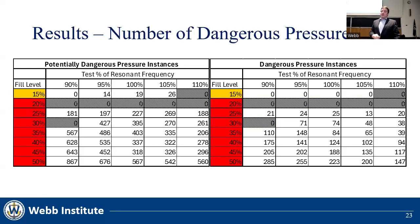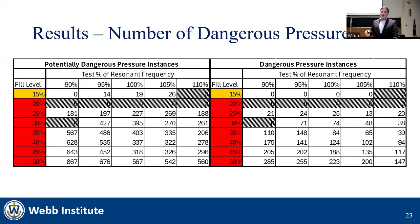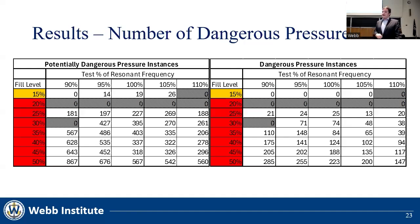These two tables show the number of times in each run that pressure exceeded potentially dangerous limits, as shown on the left, or exceeded the dangerous limit, as shown on the right. Like the maximum pressures, the number of exceedances increases as fill height increases, and the highest number of limit exceedances is found at near-resonant frequencies.